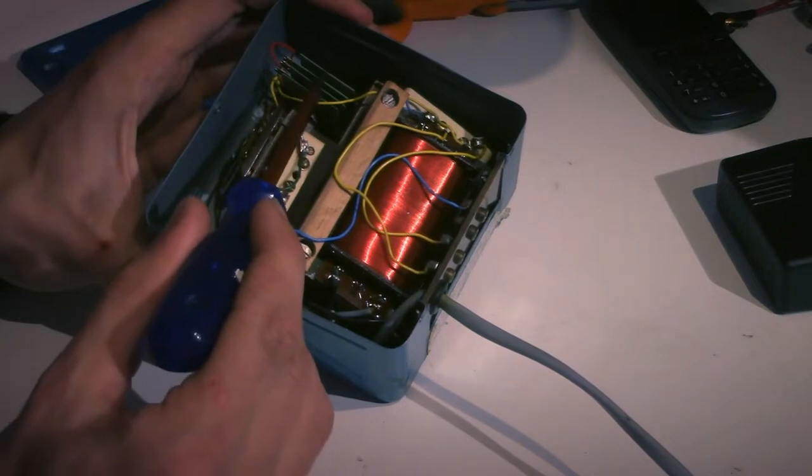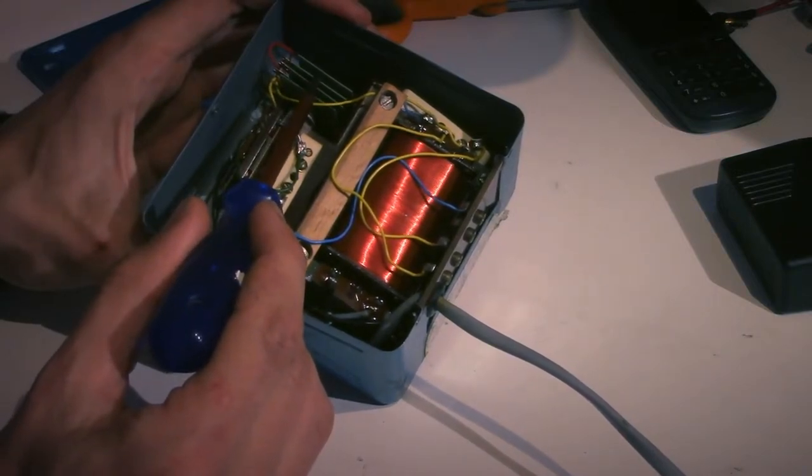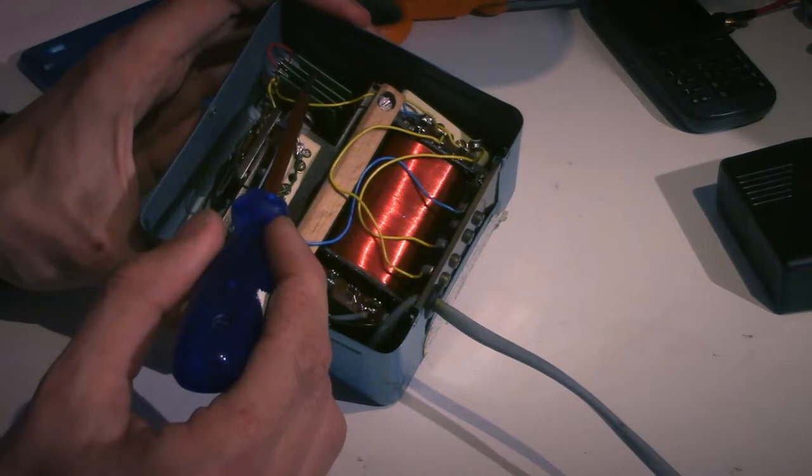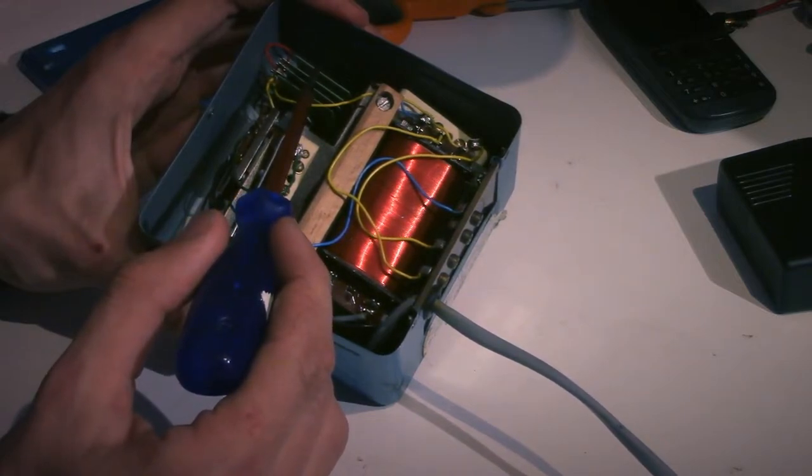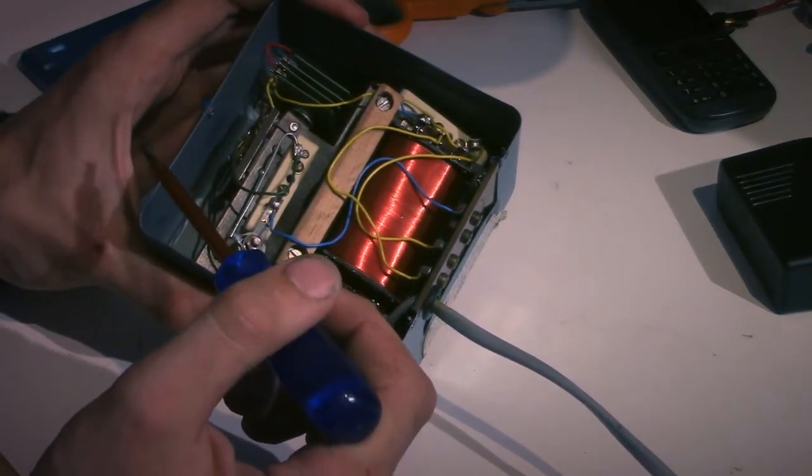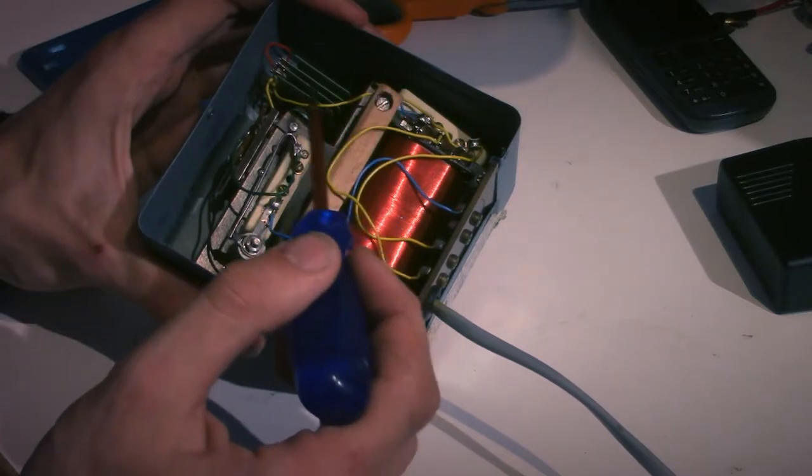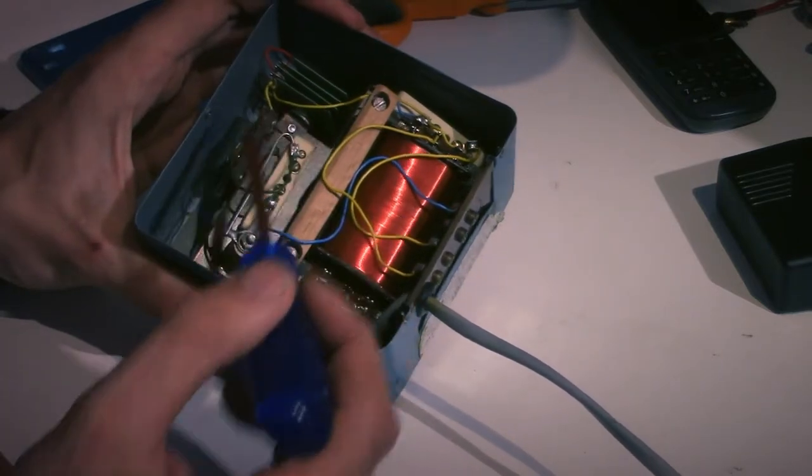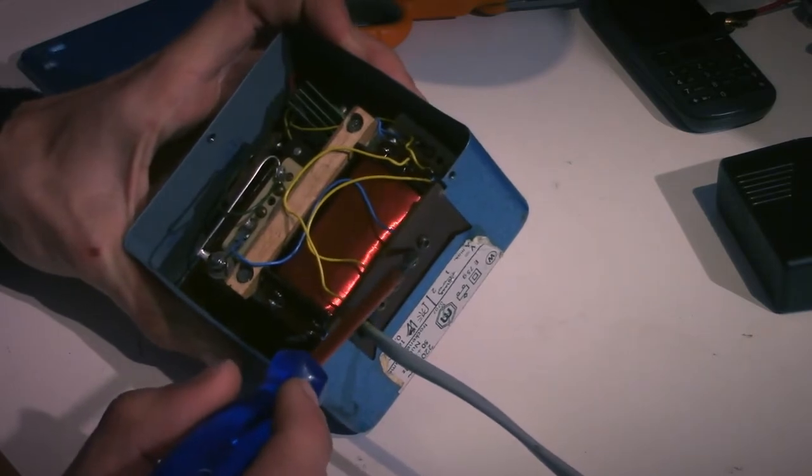So this part with the square plates is a very old-fashioned rectifier. And what this rectifier does is it converts the AC power into DC power. So the low voltage AC gets converted into low voltage DC, and then it goes to the output over here.